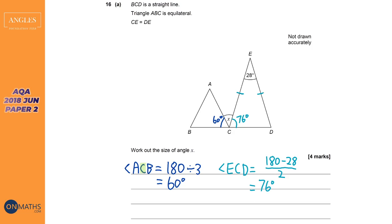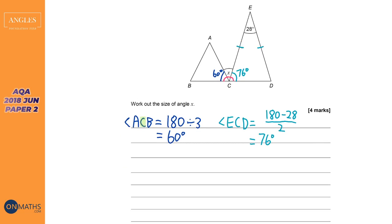These three angles here make a straight line, so to find x we do 180 because it's a straight line, take away the two we know — so 180 take away brackets 60 plus 76 — and that's going to be 44 degrees.